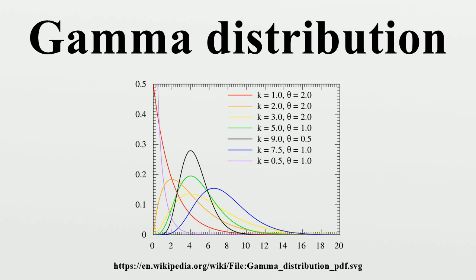There are three different parametrizations in common use: with a shape parameter k and a scale parameter θ; with a shape parameter α = k and an inverse scale parameter β = 1/θ, called a rate parameter; and with a shape parameter k and a mean parameter μ = kβ. In each of these three forms, both parameters are positive real numbers. The parametrization with k and θ appears to be more common in econometrics and certain other applied fields, where the gamma distribution is frequently used to model waiting times.